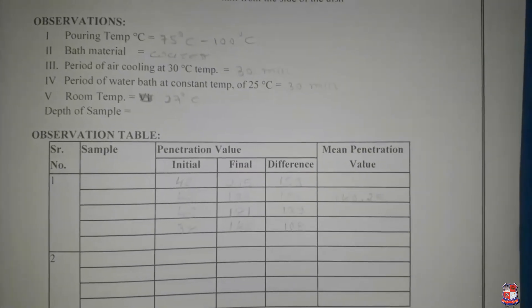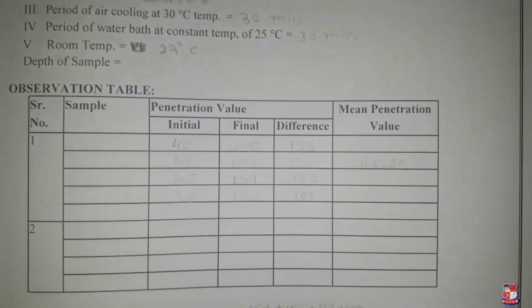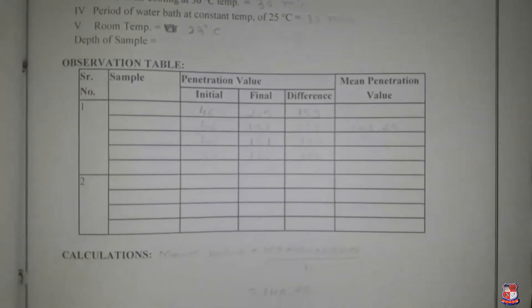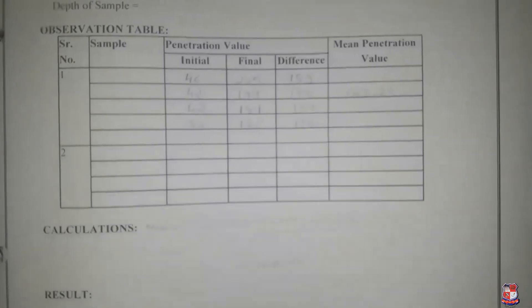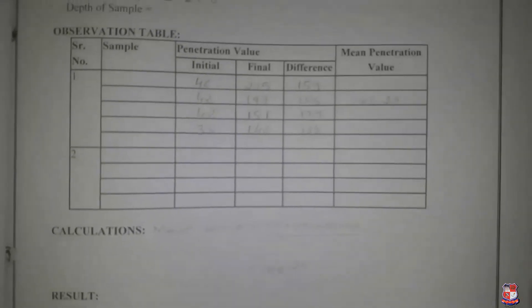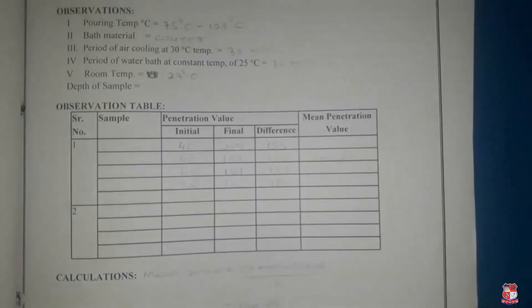Now follow the same procedure for the next reading, and record the readings to find the mean penetration value of the bitumen. Our mean value of bitumen is 140.25, which is our penetration value. Thank you.